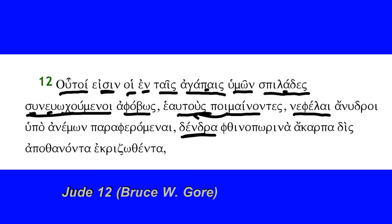The second of our nouns is nephali, meaning clouds. They are clouds devoid of rain, however — anhudroi, where hudor is the word for water, so 'without water.' They're clouds but they don't have any of the refreshing content of clouds. And then hupo anemone — hupo takes the genitive, and anemone is one of the words for winds. So by winds they are parapheromenoi, carried about here and there. They are waterless clouds blown around by the winds.